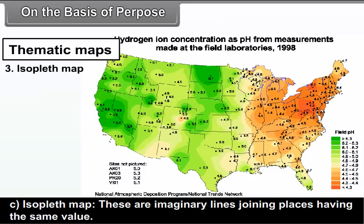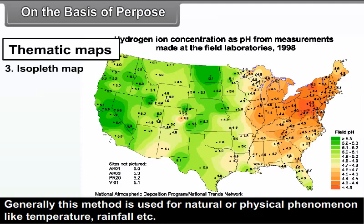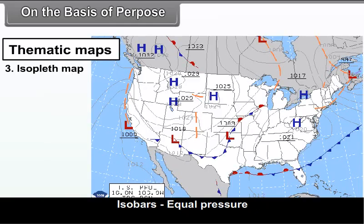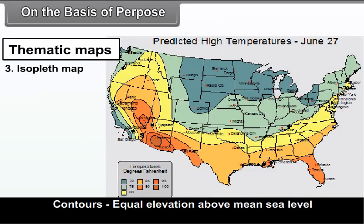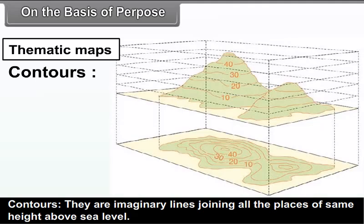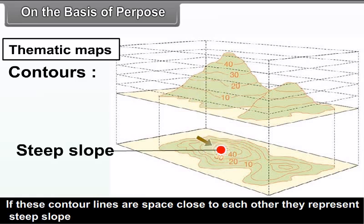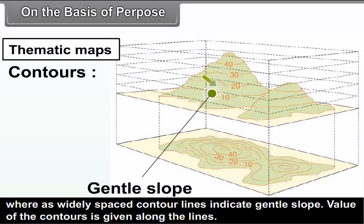Isopleth Map: These are imaginary lines joining places having the same value. This method is generally used for natural or physical phenomena like temperature and rainfall. Types include: Isotherms (equal temperature), Isobars (equal pressure), Isoheights (equal rainfall), and Contours (equal elevation above mean sea level). Contours are imaginary lines joining all places of the same height above sea level, drawn at equal vertical intervals. If contour lines are spaced close together, they represent a steep slope; widely spaced contour lines indicate a gentle slope. The value of the contours is given along the lines.